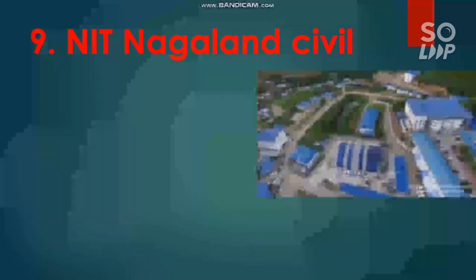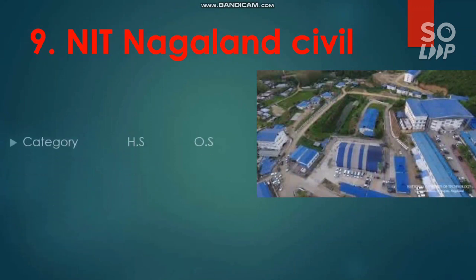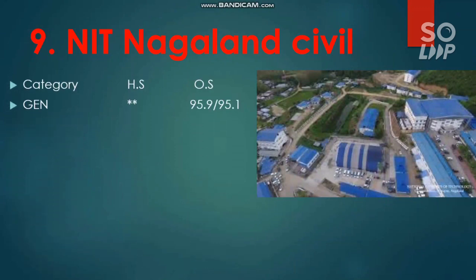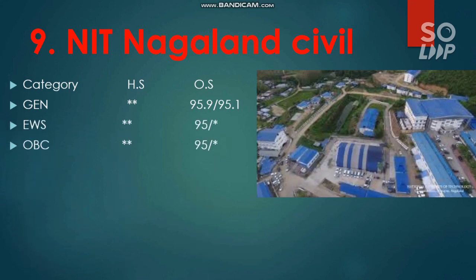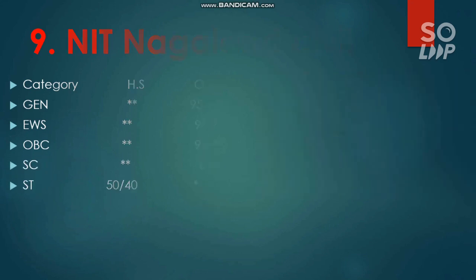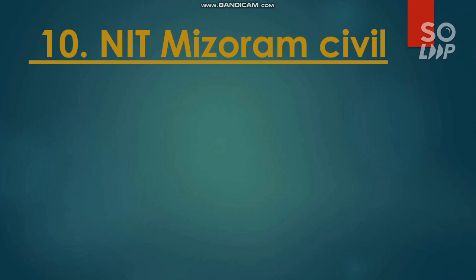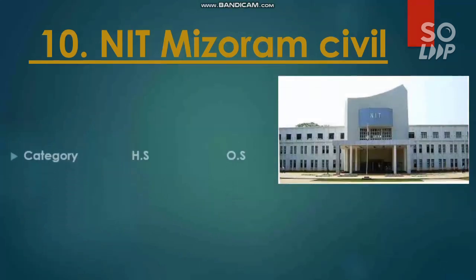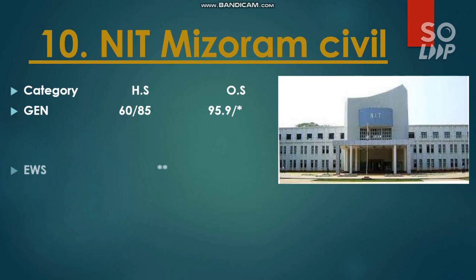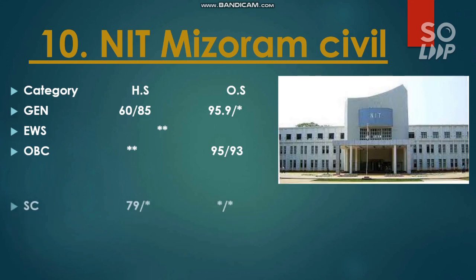NIT Nagaland also has Civil Engineering with the lowest cutoff. For General: 95.9 and 95.1 percentile required. For EWS: 95 percentile. For OBC: 95 percentile. For SC: 80 percentile. ST: no seat reserved. Additionally, for another NIT: General 95.9, EWS no seat reserved, OBC 95 and 93 percentile, SC no seat reserved, ST no seat reserved.